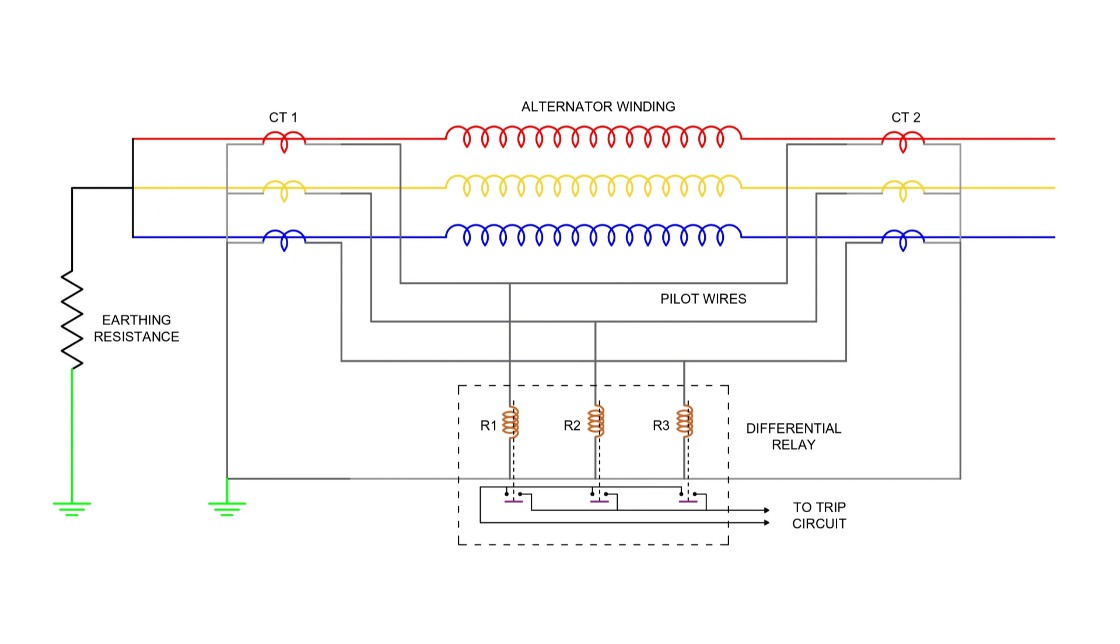Under normal operating conditions, these currents remain equal, but in the event of a fault inside the protected section, they become unequal. This difference in current is passed through a relay, which then operates to isolate the faulty section. This type of protection is also called the Mertz-Price circulating current scheme.